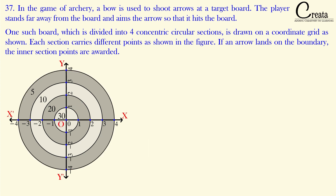Point O is the origin of this coordinate system, marked as (0, 0). All other points are measured with respect to the origin. For example, the point on the x-axis at distance 1 is (1, 0), and the point on the y-axis at distance 2 is (0, 2). This is a simple coordinate system with 0 as the center of the board, and we will solve the question based on this coordinate plane.